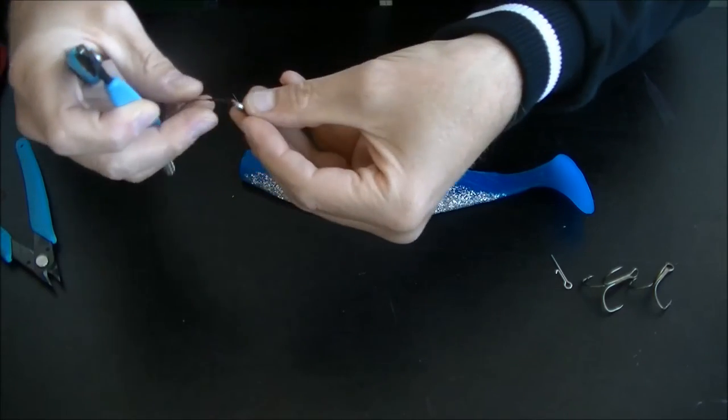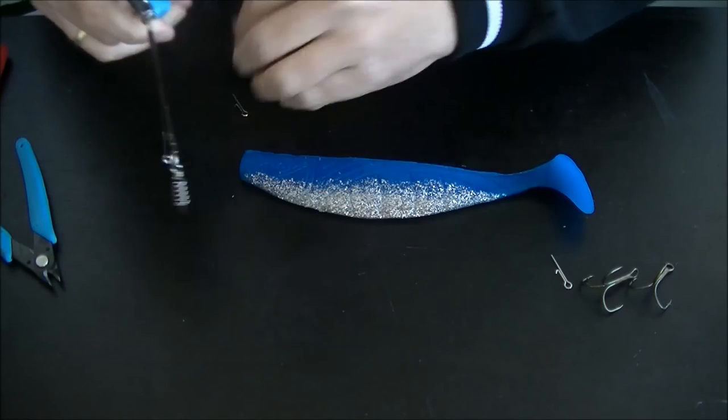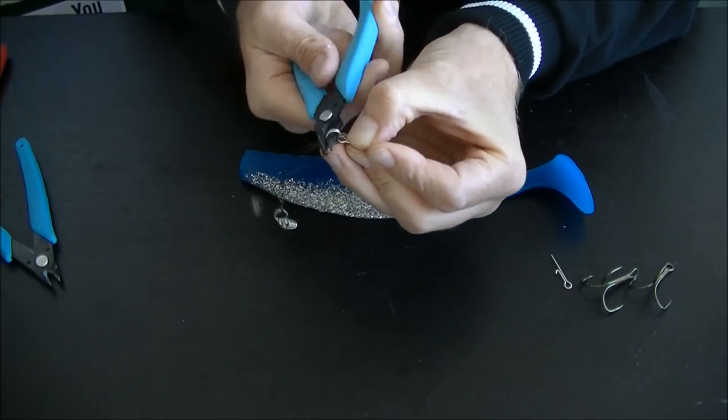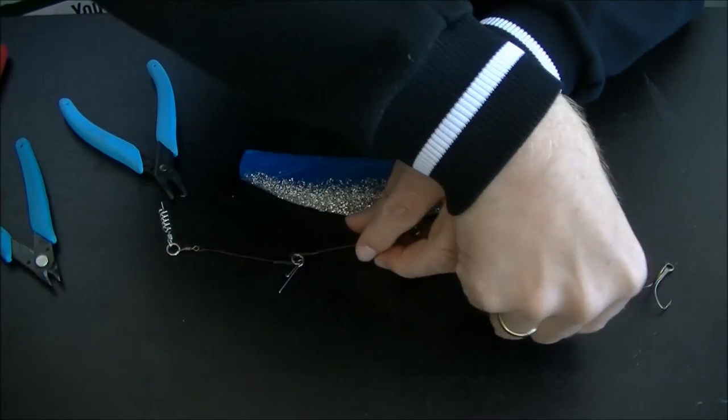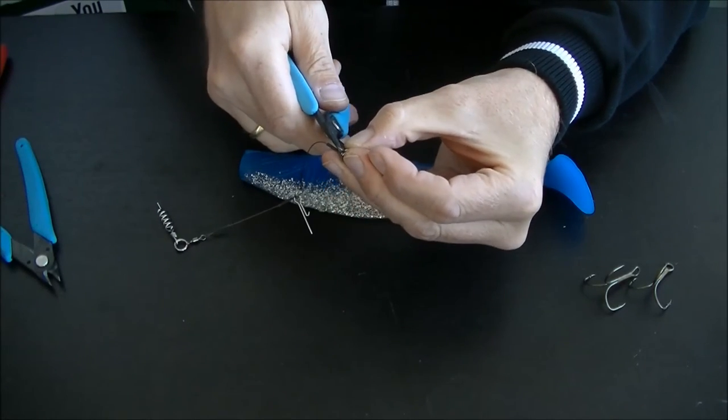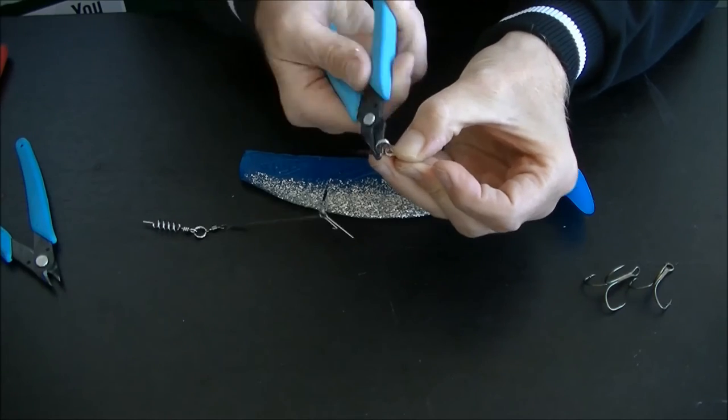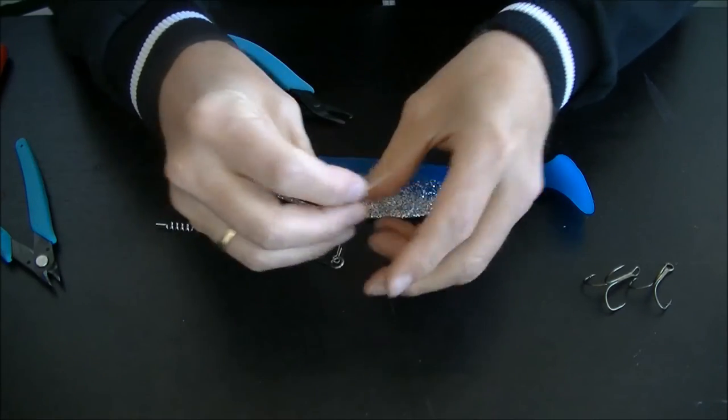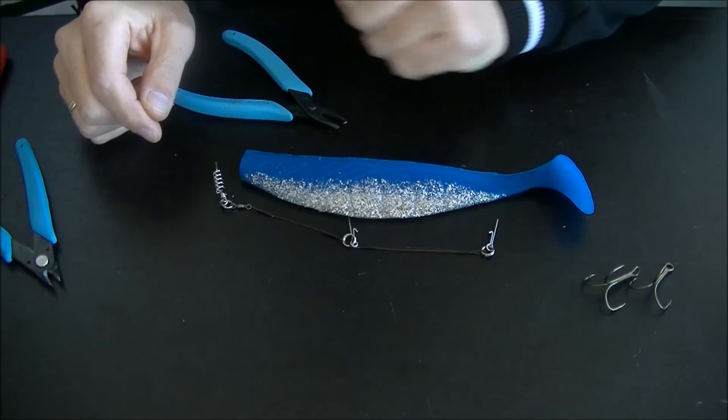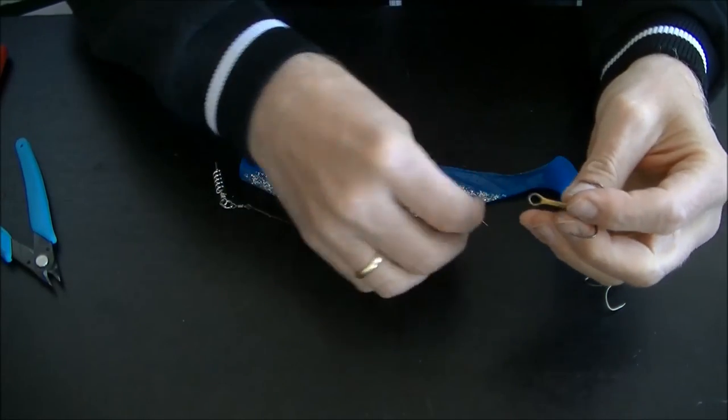We need one here. And we need one at the back end. See, it's very easy. Now we got one, two, three attaching points. Now only the trebles need to be attached.